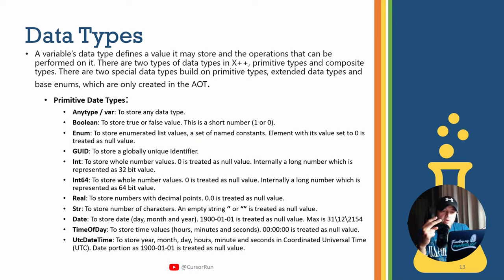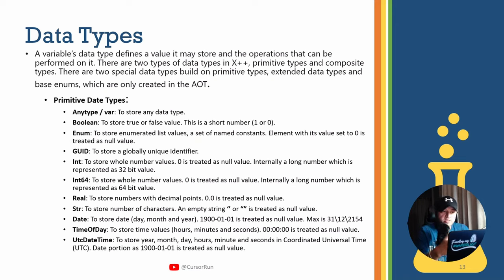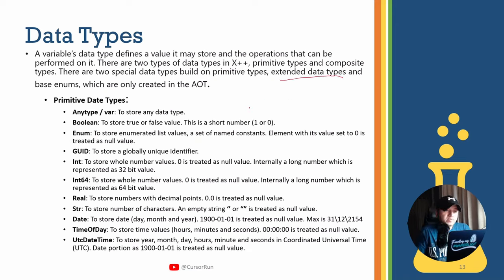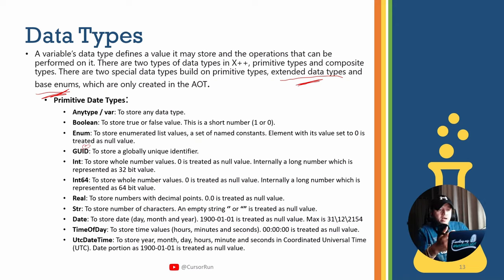There are two special types of standard or primitive data types: extended data types and enums, which you can think of as user-defined data types. Your standard or primitive data types are: anytype, boolean, enum, GUID, integer, integer64, real, string, date, time of day, and UTC datetime.